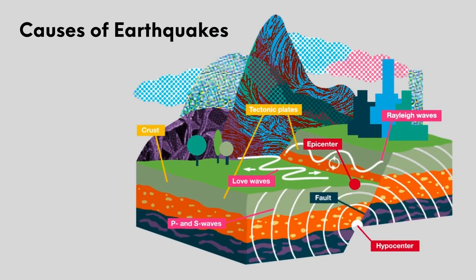Here are the main features of an earthquake. When two plates are crashing together, a hypocenter is formed. Different waves, such as love waves, P and S waves, and Rayleigh waves, will be produced throughout the earthquake.